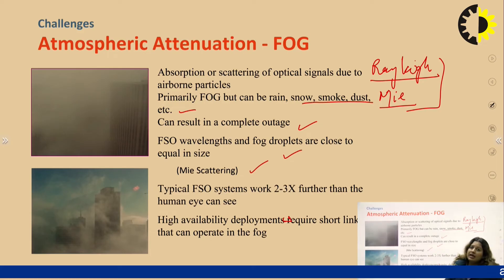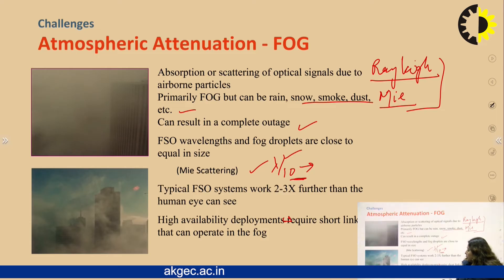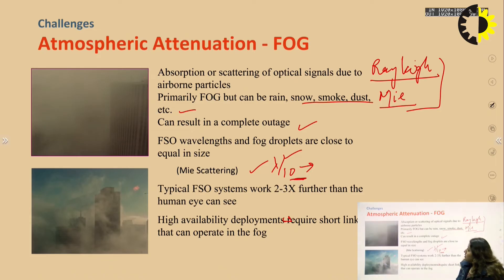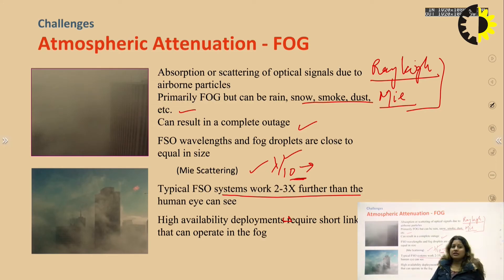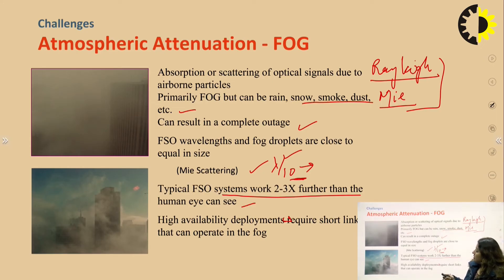For Mie scattering, the lambda/10 factor is used to determine whether Mie scattering will occur — if the particle size is approximately equal to lambda/10, there is a chance of Mie scattering. Both types of scattering occur in free space optical communication. FSO systems typically work two to three times further than the human eye can see, and high-availability deployment requires shorter links that can operate in fog.